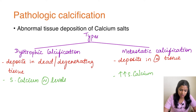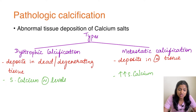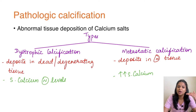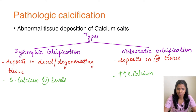Calcium salts can be deposited abnormally in tissues and it is of two types. The first one is dystrophic calcification and the second one is metastatic calcification. Dystrophic calcification is the one in which the calcium levels are normal in the body but the calcium gets deposited in dead and degenerating tissues. The tissue is not normal but the calcium levels are normal, while metastatic calcification is the exact opposite, wherein the tissue will be normal but the serum calcium levels will be elevated.